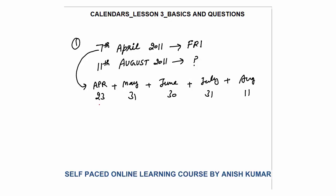One way could be to add all these and then divide by 7, but rather than adding all these and dividing by 7 — that will be a difficult task — I straight away divide each by 7. For 23: 7×3=21, remainder is 2, so 2 odd days in April. For May (31): 7×4=28, remainder 3. For June (30): remainder 2. For July (31): remainder 3. For August (11): remainder 4. So these are the odd days.